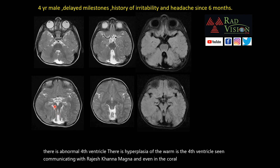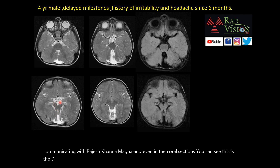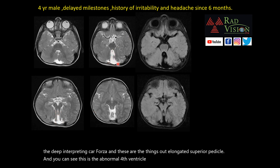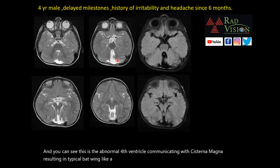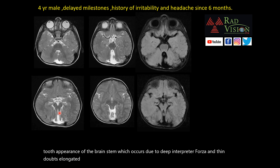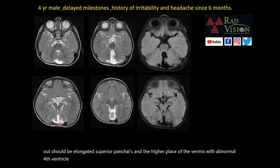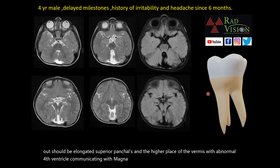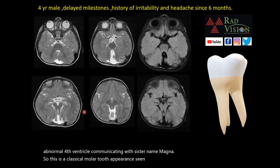In the caudal sections, you can see the deep interpeduncular fossa and the thinned-out elongated superior cerebellar peduncles. The abnormal fourth ventricle communicates with the cisterna magna, resulting in a typical batwing-like configuration. This is the classical molar tooth appearance of the brainstem, seen in Joubert syndrome.